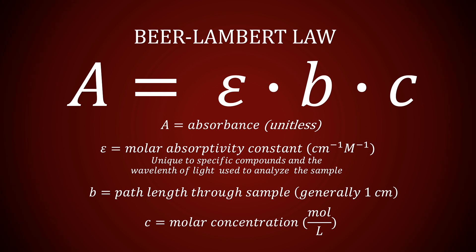All of these factors are encoded in the Beer-Lambert law, or simply Beer's law. The absorbance of the sample is equal to epsilon — the molar absorptivity constant — times B, the path length, times C, the concentration of the solution. Pay special attention to the units and features of each variable on the screen.